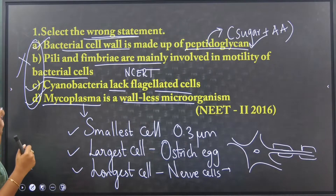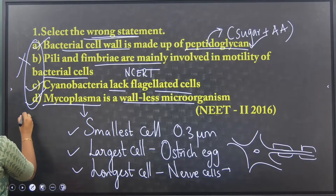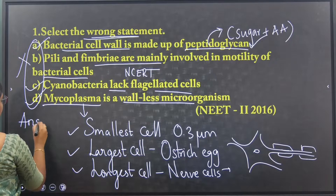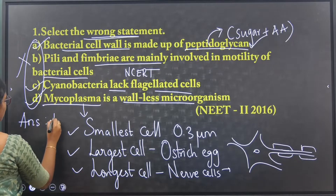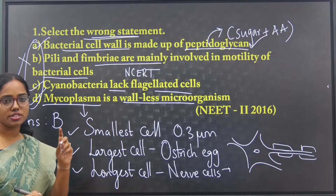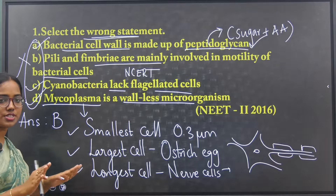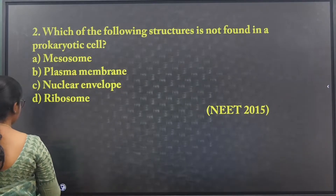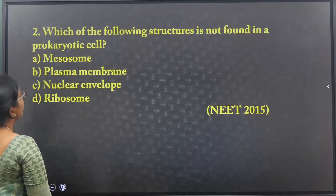So the correct answer is option B. The wrong statement is about pilli and fimbria being involved in motility. First question is done. We will move to the second question.